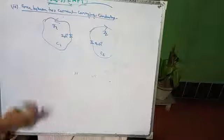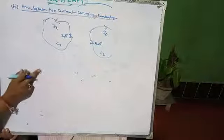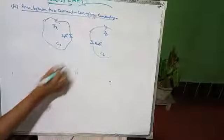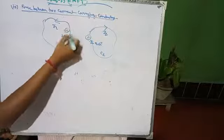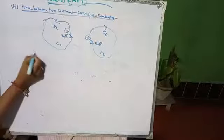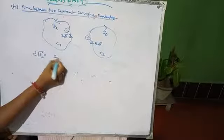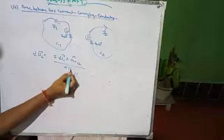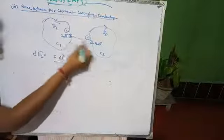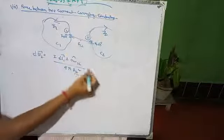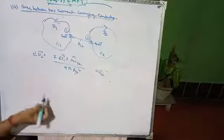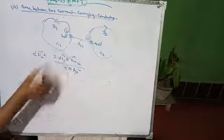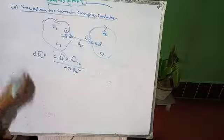We consider two loops C1 and C2 carrying currents i1 and i2 respectively. The magnetic field intensity at point two due to a current element at point one is dH2 = (i1 dl1 cross a_R12) / (4π r12²), where r12 is the distance between the two points and a_R12 is the unit vector from point one to point two.